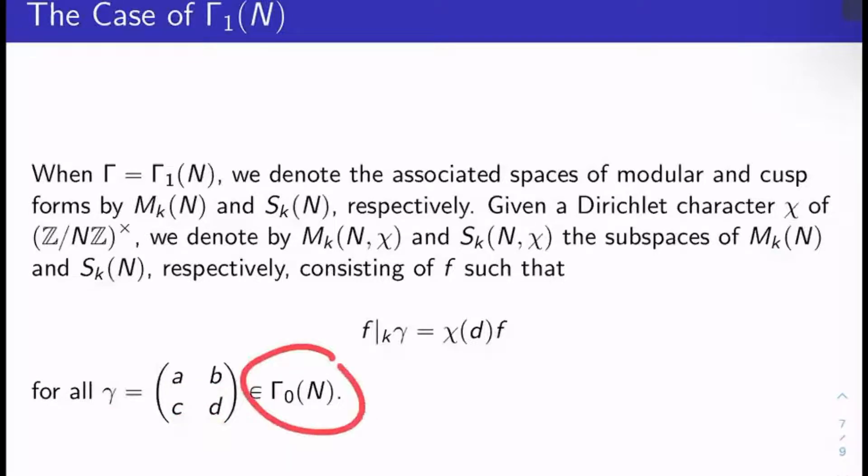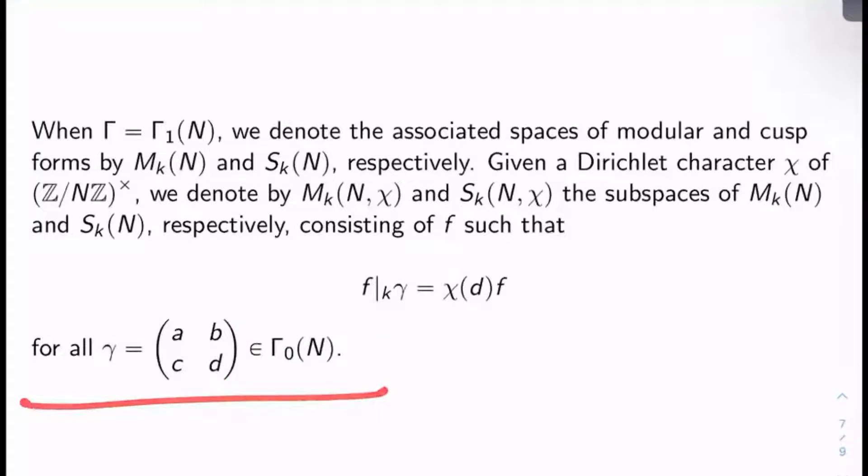Remember Γ_0(N) is just all of the 2 by 2 matrices in SL_2(Z) that reduce to an upper triangular matrix mod N. So it doesn't matter which matrix I pick, as long as it is in Γ_0 and it has lower right entry d, then a modular form of level N associated to χ will be something that's a modular form in M_k(N), but it also isn't quite necessarily invariant under bar sub k of γ for γ in Γ_0(N), but it almost is. It's invariant up to a twist by χ(d), we would say.